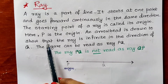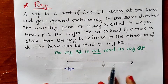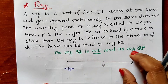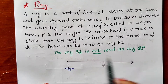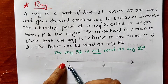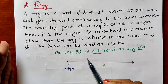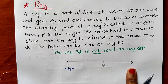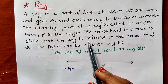An arrowhead is drawn to show that the ray is infinite in the direction of Q. That means it can be extended endlessly on the side of Q — limitlessly. But at point P on the left hand side, you cannot extend this ray because point P is the origin of the ray. From point P the ray starts, so we cannot extend it after P on the left hand side. But you can extend the ray on the right hand side after Q because an arrowhead is drawn there.